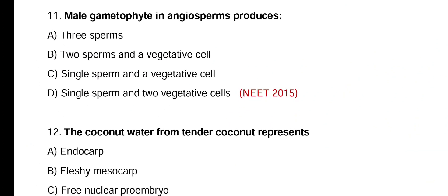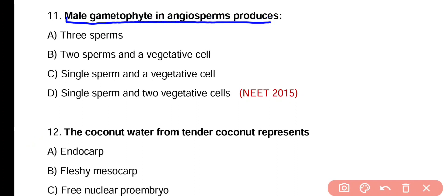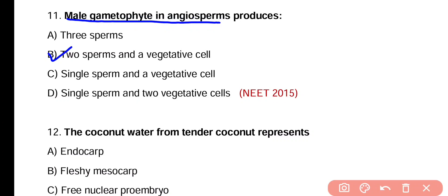Question number eleven. Male gametophyte in angiosperms produces three sperms, two sperms and a vegetative cell, single sperm and a vegetative cell, or single sperm and two vegetative cells. Correct answer is option B. Male gametophyte in angiosperms consists of two generative nuclei and one vegetative cell, producing two sperms and one vegetative cell.